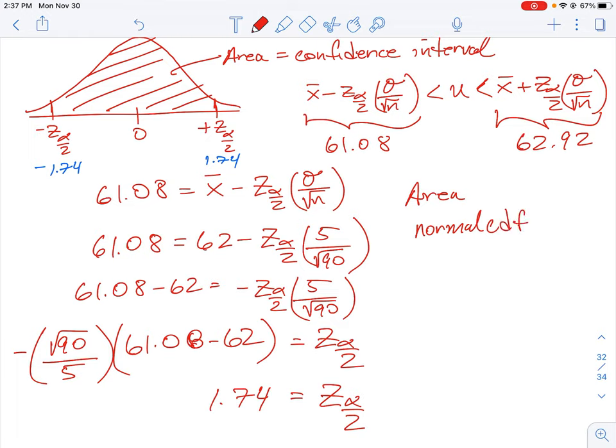On our calculator, that function takes two parameters: it takes the lower value and the upper value, so it's just basically the range in between. So we're going to take negative 1.74 to 1.74. That's what you'll plug into your calculator, and when you run that through your TI calculator you will get 0.9199. So this is telling us that we have a 92 percent confidence interval.